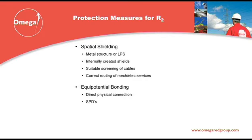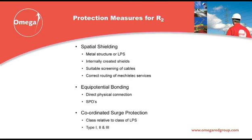Of course, it is important to ensure that equipotential bonding is provided between incoming services and the internal building services by means of Type 1 lightning current surge protection devices. This bonding surge protection device may not provide protection of electronic systems and is there to prevent dangerous potentials being developed and causing sparking in the event of a strike. It is important to ensure that these equipotential bonding surge protection devices are of the same level of protection as the structural lightning protection.